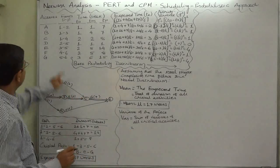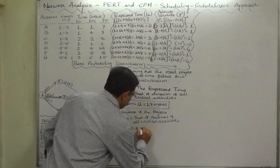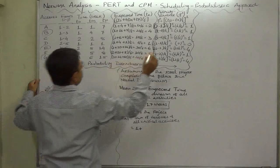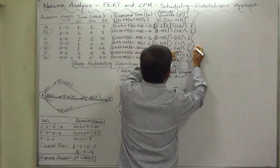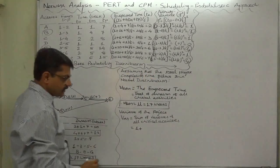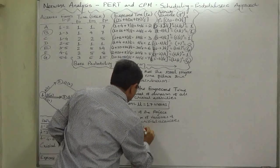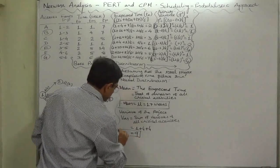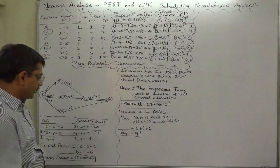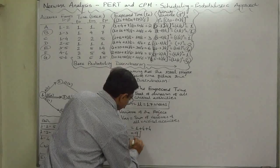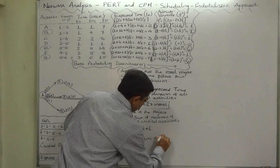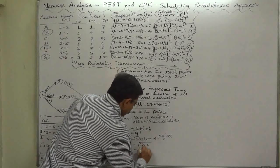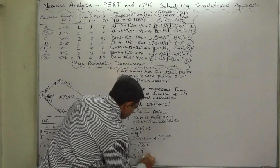B, E, and G are the critical activities. The variance of B is 1, variance of E comes to 4, and variance of G also comes to 4. So the variance of the whole project completion time comes to 9. Now we can calculate the standard deviation, which equals the square root of the variance — that is, the square root of 9 — so the standard deviation comes to 3 weeks.